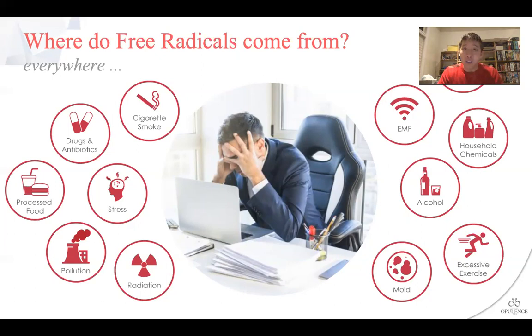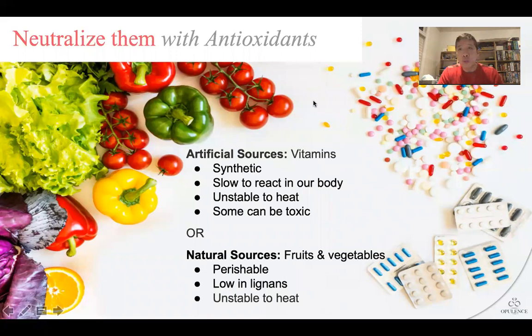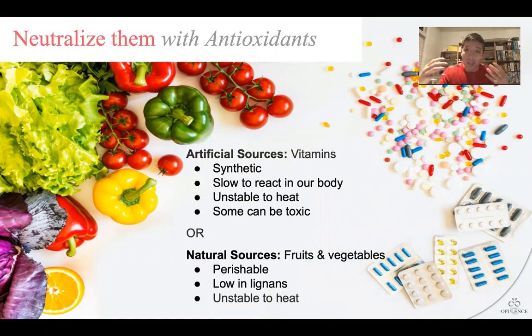The key is to get enough antioxidants to try to balance the free radicals that are coming at us on a daily basis. There are two main common sources of antioxidants. One is the artificial sources — vitamins that you can buy in grocery stores and pharmacies. Unfortunately they are synthetic, and whatever is synthetic, your body typically has a harder time to digest. They're also very slow to react in the body, can be unstable to heat, and some can be toxic.